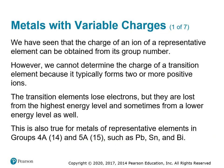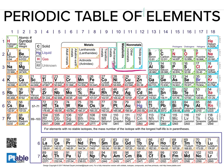We've seen that the charge of an ion of a representative element can be obtained from its group number. The alkaline metals have a plus 1 charge, the alkaline earth metals have a plus 2 charge, and group 3A or 13 elements have a plus 3 charge. These are our representative elements — group 1A, group 2A, group 3A.